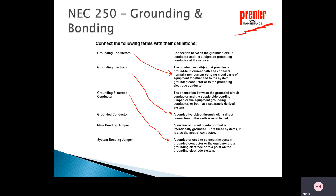The grounded conductor — this was difficult for me in my younger years — is a system or circuit conductor that is intentionally grounded. On the systems we deal with now, that's our neutral. It is not the grounding conductor, but it is a grounded conductor. Back at the source we actually connect that to the grounding system, so it's often referred to as the neutral conductor.